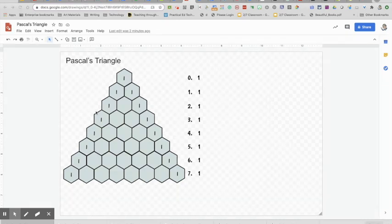To build the triangle, each number is the sum of the two numbers above it. So you continue building the triangle by finding the sum of the numbers.